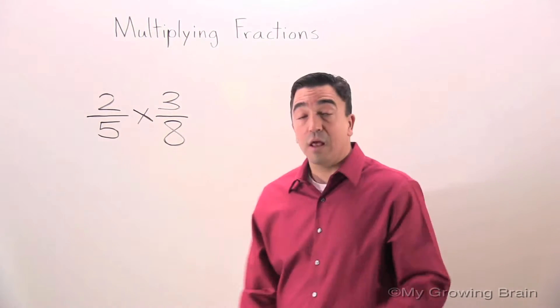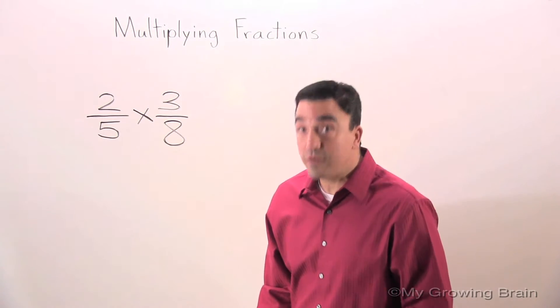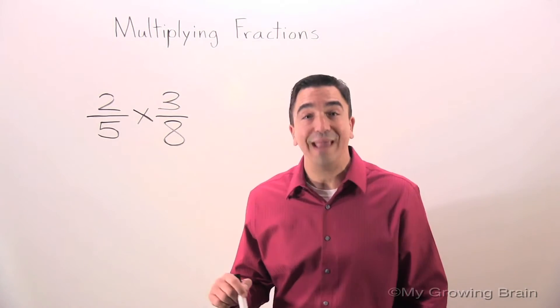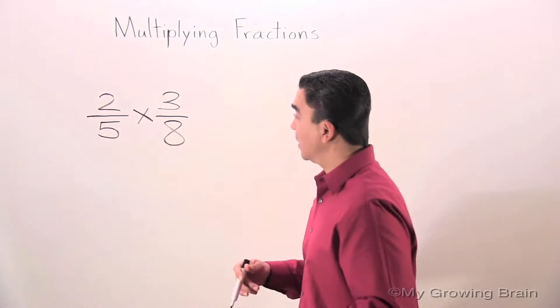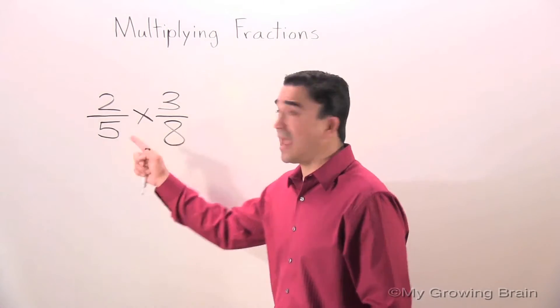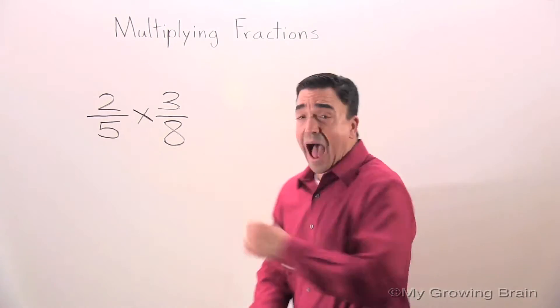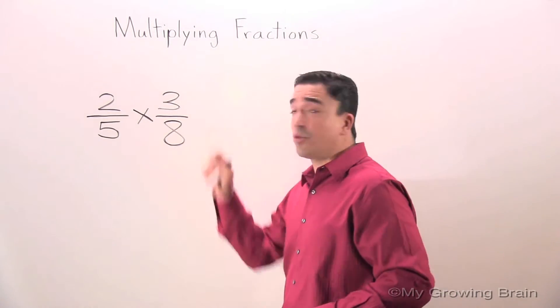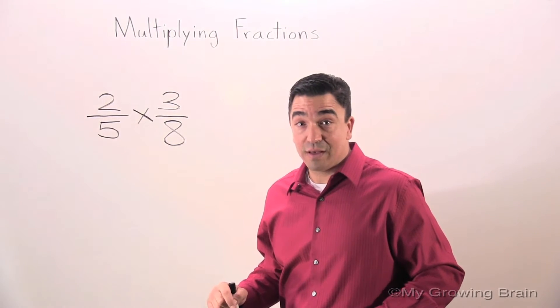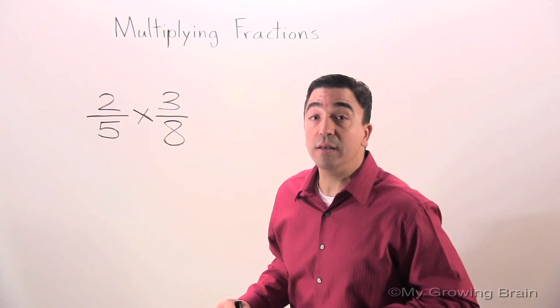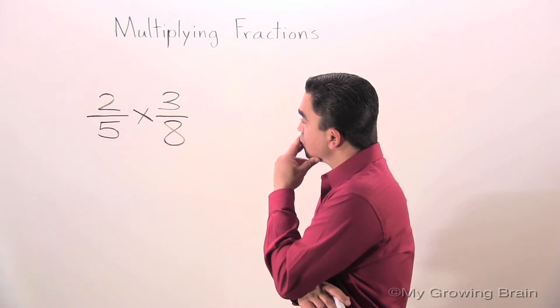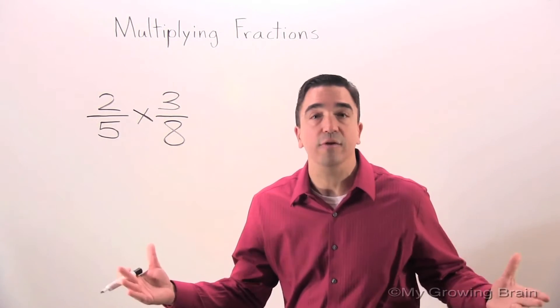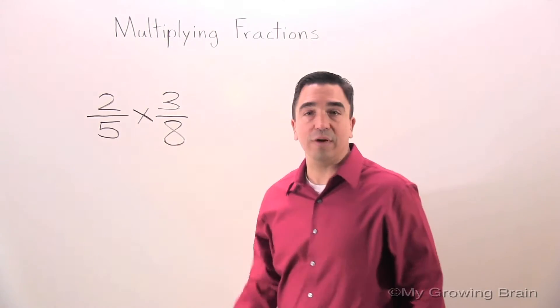Alright, here we go. The first step I'm going to do is cross-cancel. I want to see if I can make this easier. Let's start with 3 and 5. I want to think of a number that can go into 3 and 5 that is greater than 1 evenly. Can't do it. I can't cross-cancel 3 and 5.